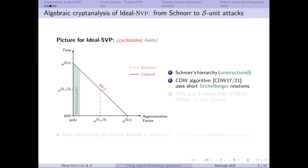The first generic algorithm for all lattices and a wide range of fields was the CDW algorithm by Cramer, Ducas, and Wesolowski in 2017, and the Jutton-Zolotarev extension from last year. Using short Stickelberger relations, if you have a quantum computer, in polynomial time you can probably find sub-exponentially small vectors in your lattice. This was the first breach into the Schnorr hierarchy.